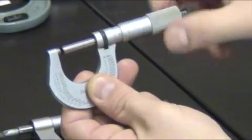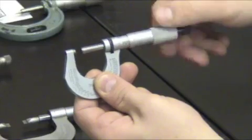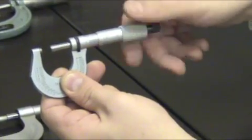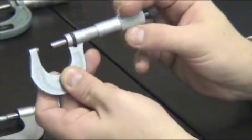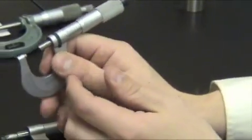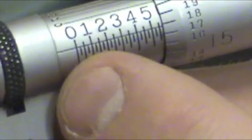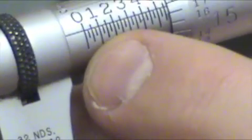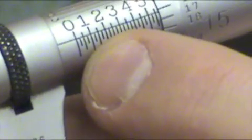Underneath the thimble is the main scale. Now, to read a micrometer, you need to understand what each of these lines are for. Each of the larger numbers read in one hundred thousandths. Smaller dashes read in 25,000 increments, which is one revolution on the thimble, or one complete turn.